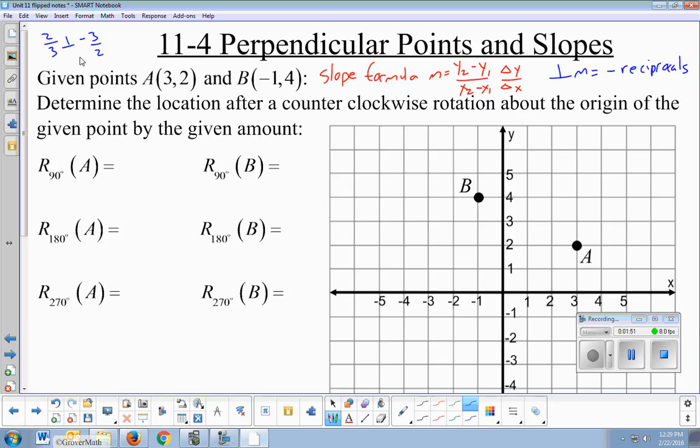2 over 3, the whole fraction is positive. Negative 3 over 2, the whole fraction is negative. Remember, when you have negative 3 over 2, it's not that the 3 is negative and the 2 is positive. It's that 3 over 2 together are negative. So you see that it's flipped upside down and negated.